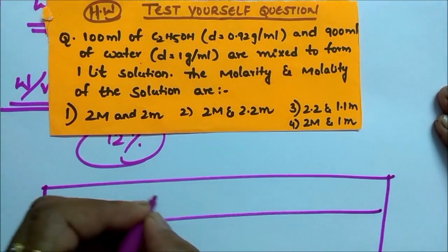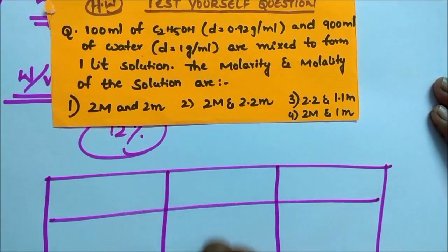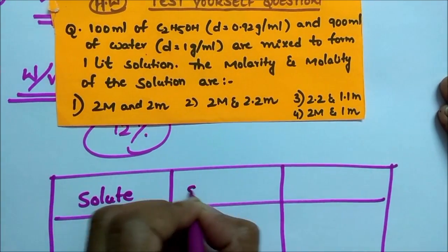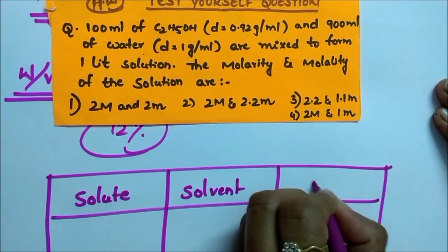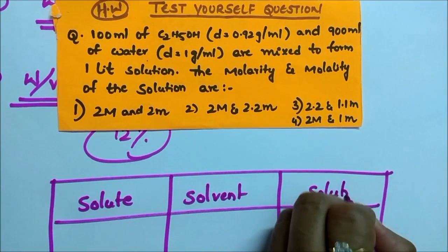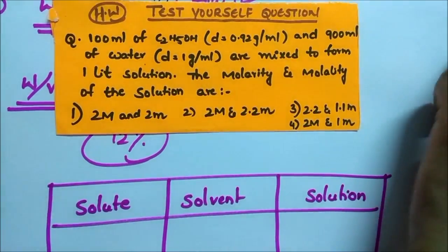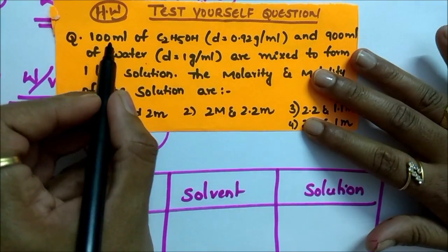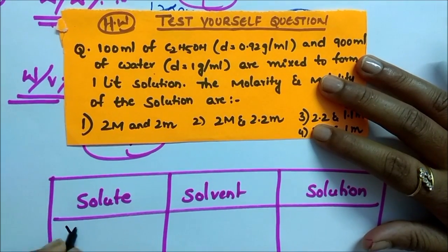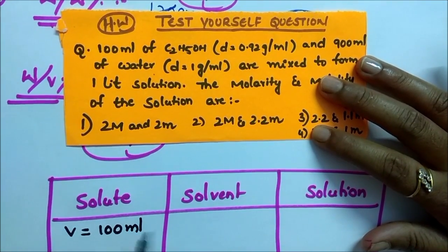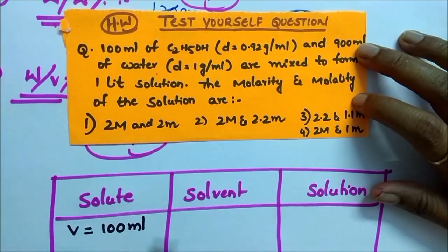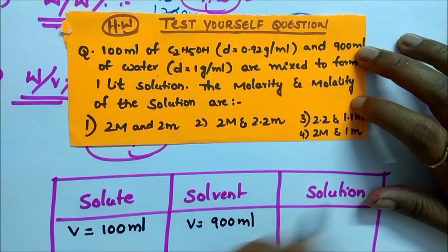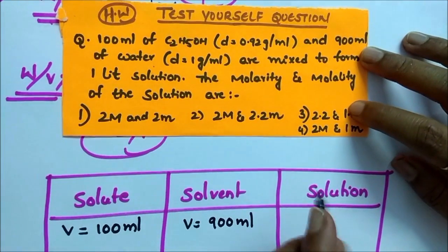First, the trick I taught you - always make three columns like this. One is for solute, another one is for solvent, and one more is for solution. What is given in question? Volume 100 ml ethanol, volume of solvent water is 900 ml, volume of solution is 1 liter means 1000 ml.